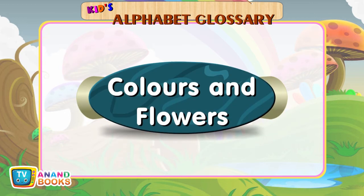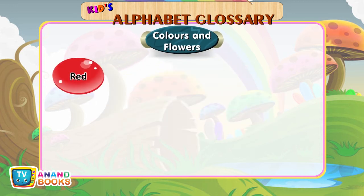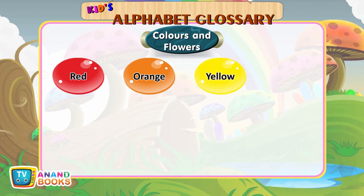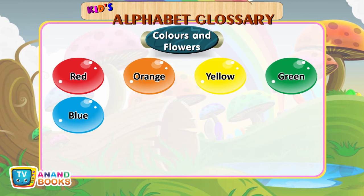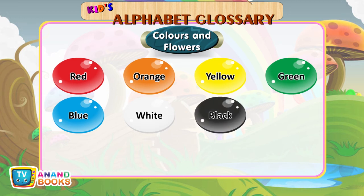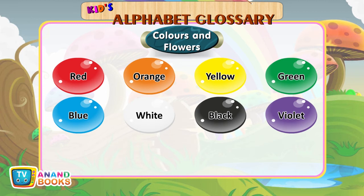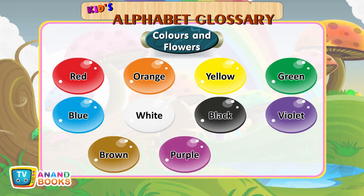Colours and flowers. Red. Orange. Yellow. Green. Blue. White. Black. Violet. Brown. Purple. Pink.